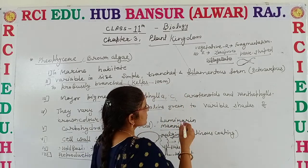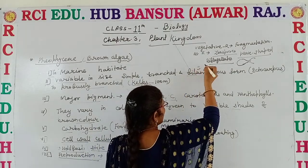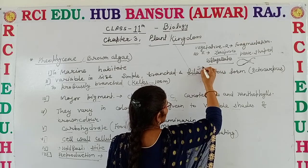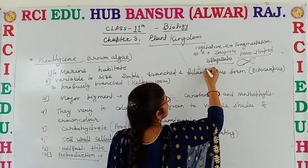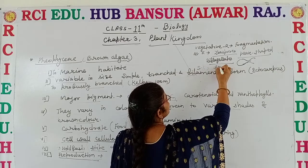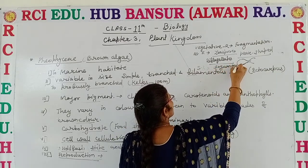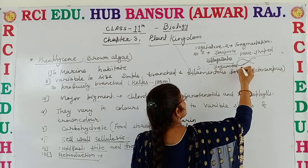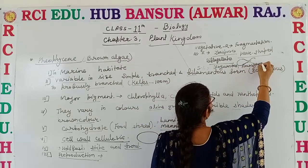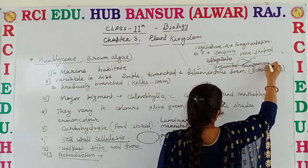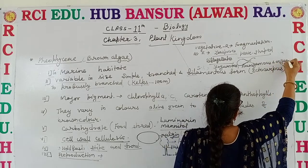Regarding the sexual mode of reproduction, sexual reproduction takes place through isogamous type and oogamous type.